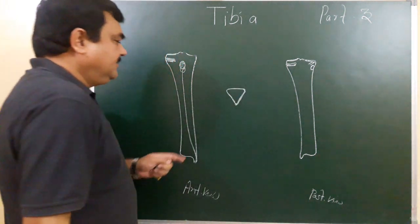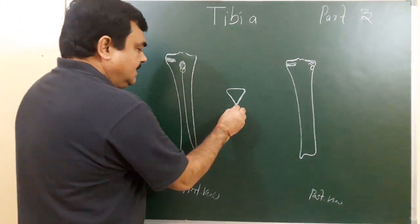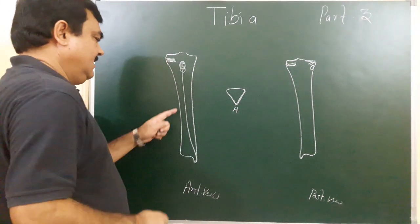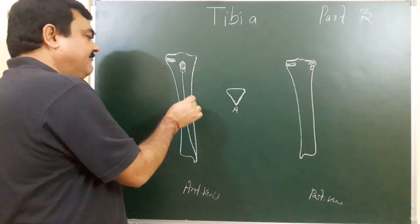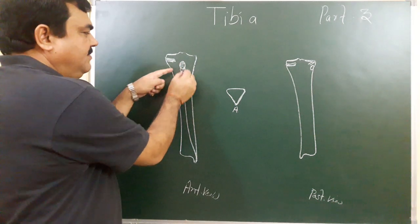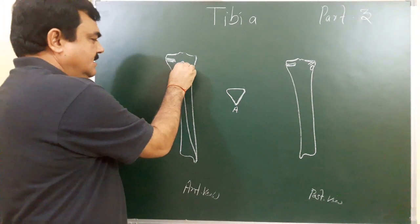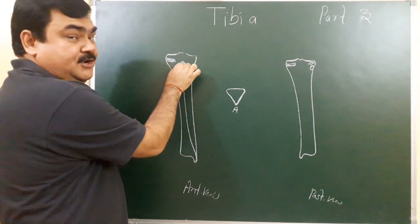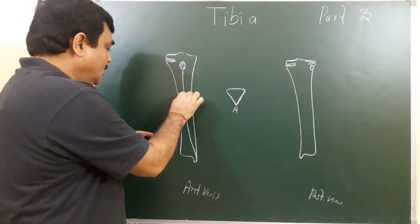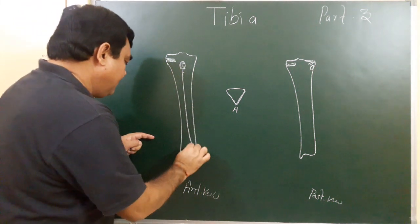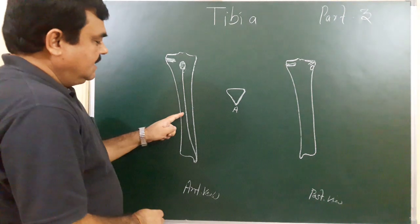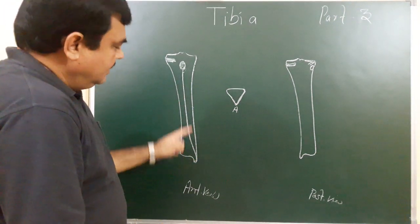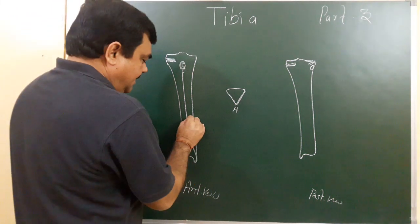It has three borders. This is the anterior border. This border extends from the tibial tuberosity — this is the tibial tuberosity here — to the anterior border of the medial malleolus. So from here to here, this is the anterior border.